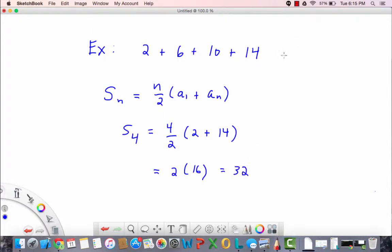And if we did this the long way, of course with only four terms it's really not that bad. We see that we have 2 plus 6 plus 10 plus 14, so we have 8 plus 24, which is 32.